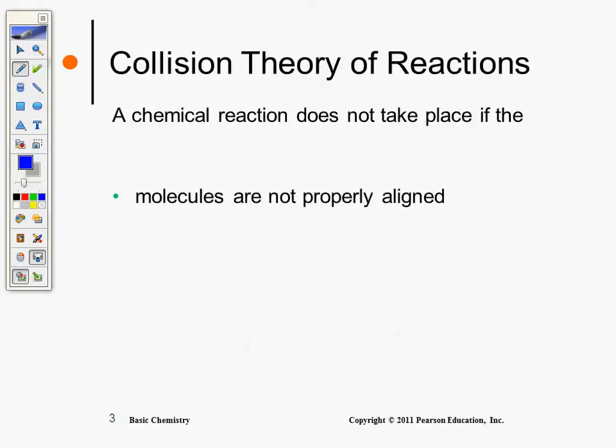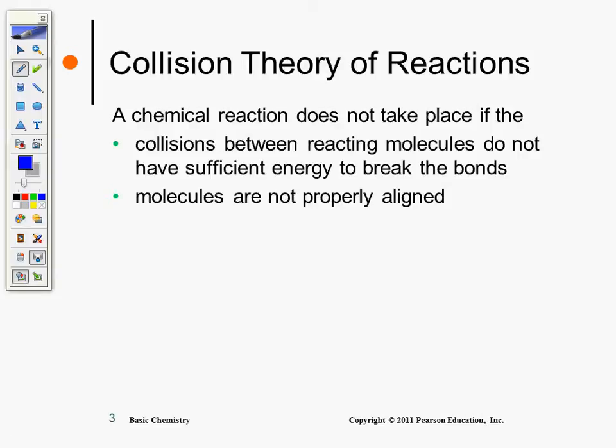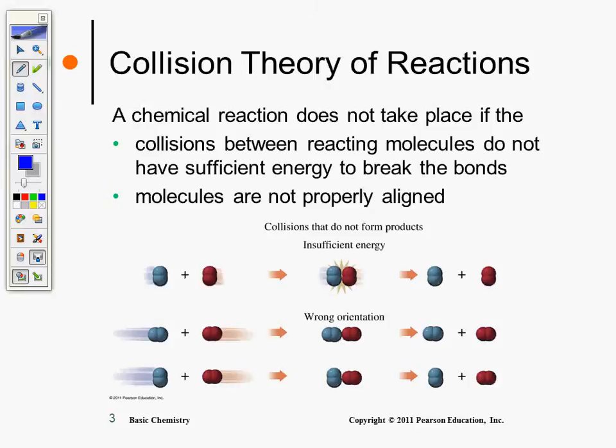A chemical reaction does not take place: A — if collisions between reacting molecules do not have sufficient energy to break the bond. How can you increase the energy? Increase the temperature, or add more reactants. B — molecules are not properly aligned. Collisions do not form products if we have insufficient energy or wrong orientation.